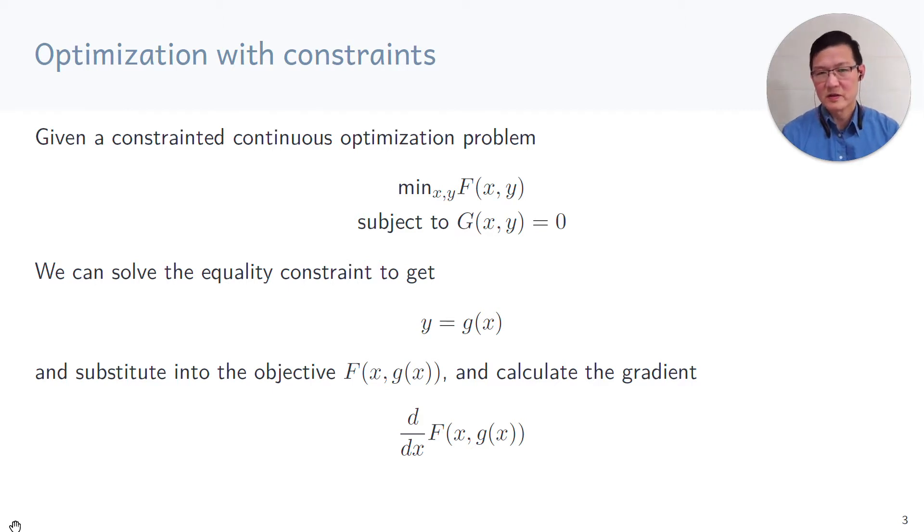We can solve this equality constraint big G to provide an explicit form of y as a function of x. We call this explicit form little g. And we substitute it back into the objective, and given this objective function that's purely in terms of x, we can directly calculate the gradient.